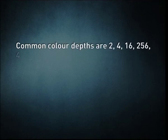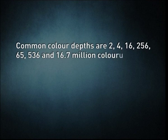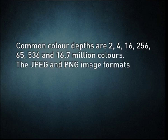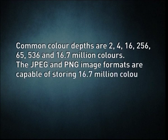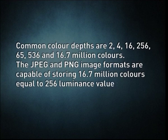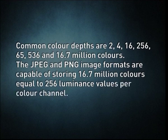It is possible using software to change the color depth of images. Common color depths are 2, 4, 16, 256, 65,536, and 16.7 million colors. The JPEG and PNG image formats are capable of storing 16.7 million colors, equal to 256 luminance values per color channel. In addition, grayscale images of 8 bits or less can be created, usually via conversion and downsampling from a full color image. Grayscale conversion is useful for reducing file size dramatically when the original photographic print was monochrome but a colored tint has been introduced due to aging effects.